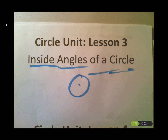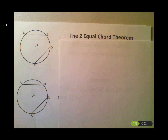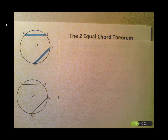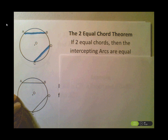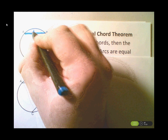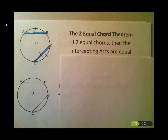Let's get started. The first one is the Two Equal Chord Theorem. So if I have two chords that are equal to each other, their intercepting arcs are equal. If two chords are equal, then their intercepting arcs are equal to each other. So if I know that chord AB and chord CD are equal, then I know that arc AB and arc CD are equal.